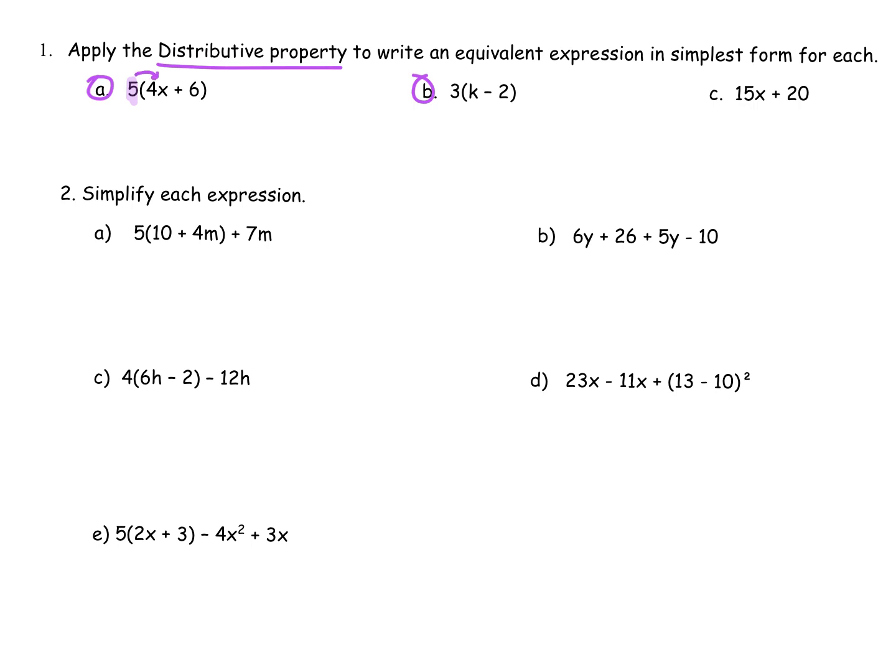So we go 5 times 4 is 20, don't forget the variable, plus 5 times 6 is 30 and it's plus because of that plus sign in the middle. B, we're going to take the 3 out front and multiply with things inside. So 3 times k, smoosh them together, 3k minus 3 times 2 is 6.